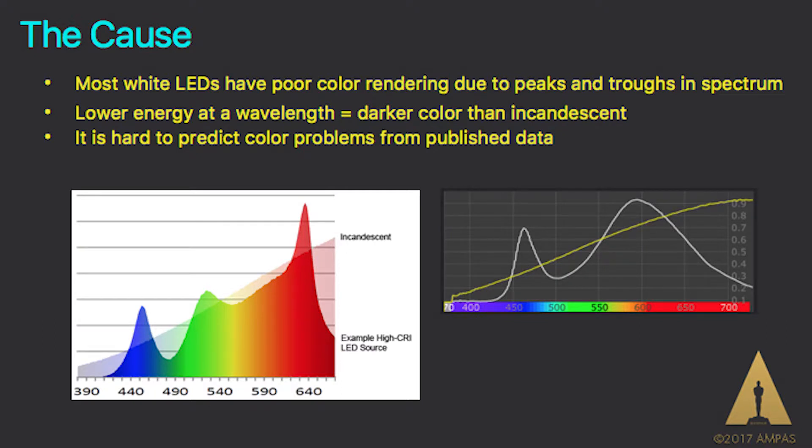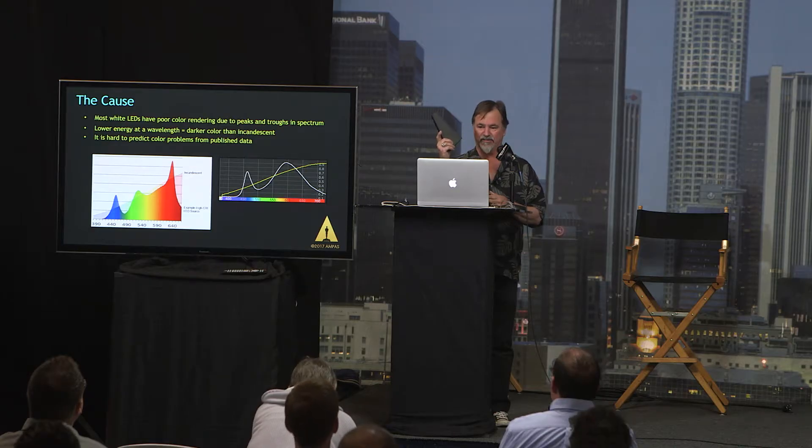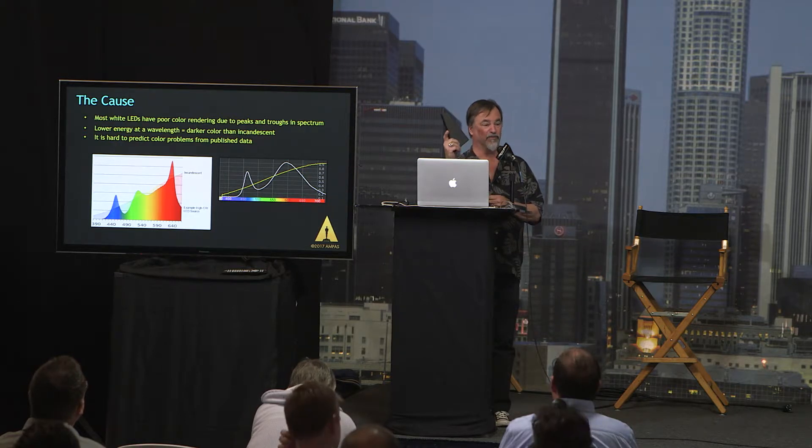As we've been seeing in other presentations, most white LEDs have poor color rendering index due to peaks and troughs in spectrum. Lower energy at a wavelength equals a darker color than incandescent, and it is hard to predict color problems from published data. One thing that I carry in my kit — I got this at Amazon.com, about an eight or nine dollar tool — is an ISCO spectroscope. If you want to carry this in your kit, you can point it at any source and see whether you've got continuous spectrum or partial spectrum very quickly and easily. It can pretty quickly tell you whether you've got a problem in your spectrum. If there are big gaps in the spectrum of a lamp, this thing will tell you immediately.